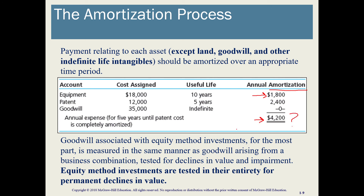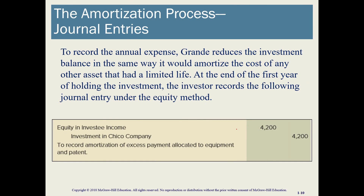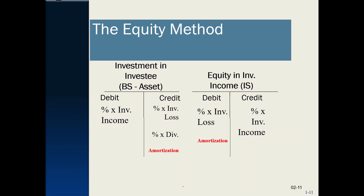How do we journalize this difference? We debit equity income by $4,200 to reduce it by the amount of amortization, and we credit Investment in Chico Company for $4,200. Looking at the T-accounts from previous presentations, the amortization decreases our Investment in Chico account and decreases our equity in investee income on the income statement.